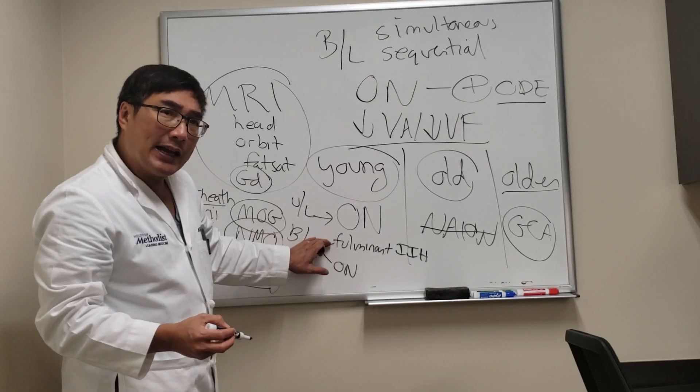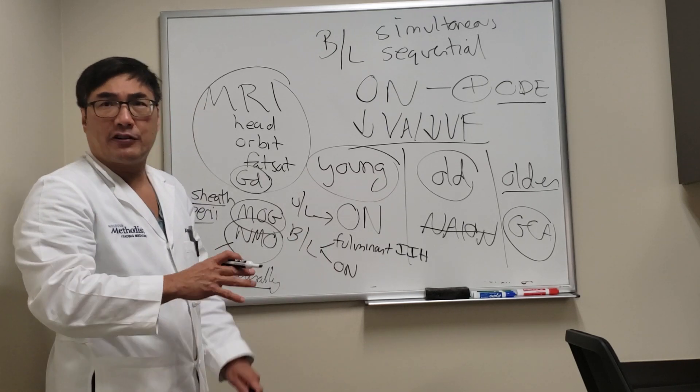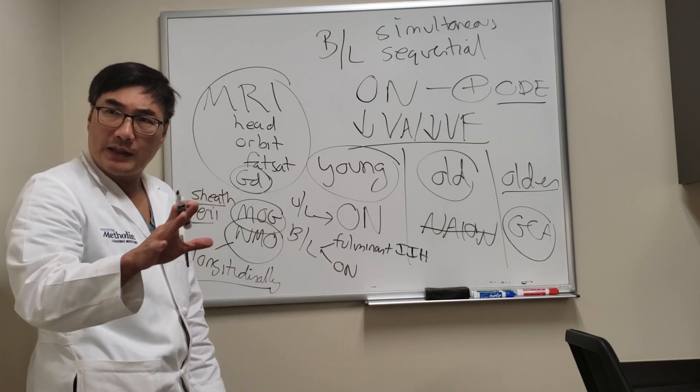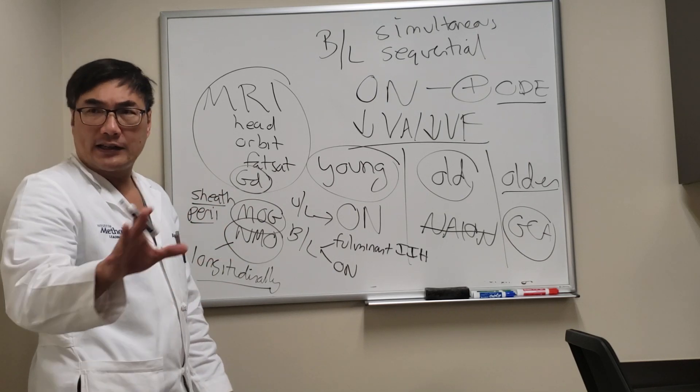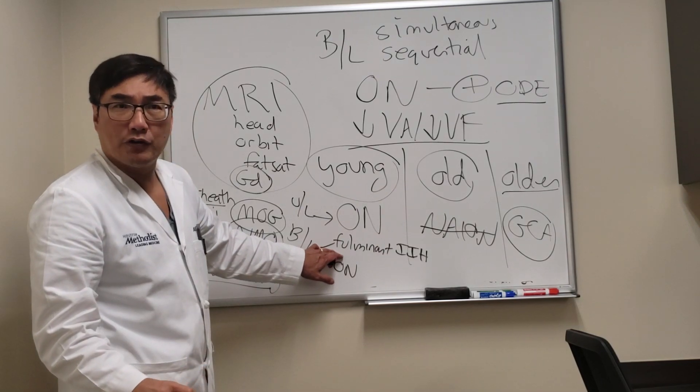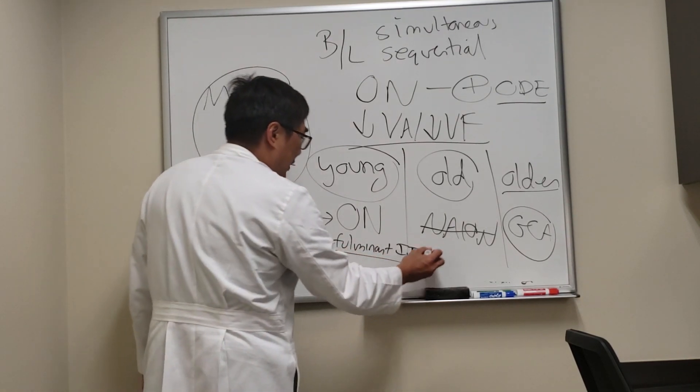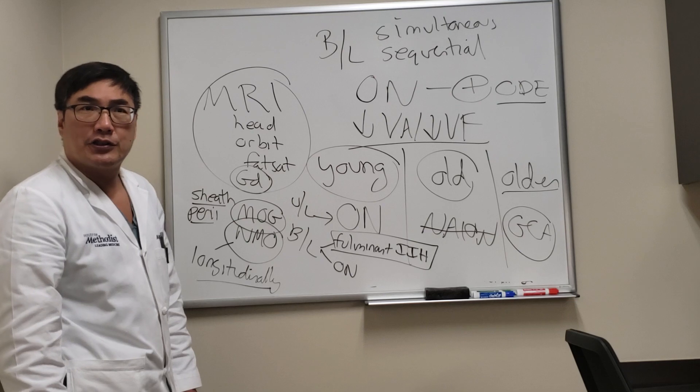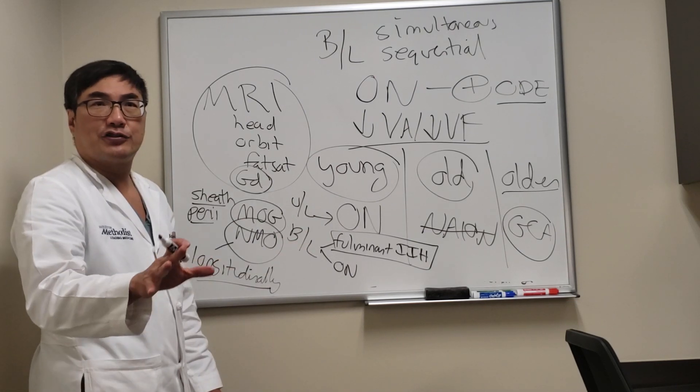In fulminant IIH the pattern is going to be the pattern of increased ICP - not enhancement but fluid in the sheath, flattening of the globe, empty sella, narrowing of the sinus, and make sure that it's not thrombosis. That person is going to have to have a spinal tap to measure the opening pressure, do lumbar drain, get ready for surgery.